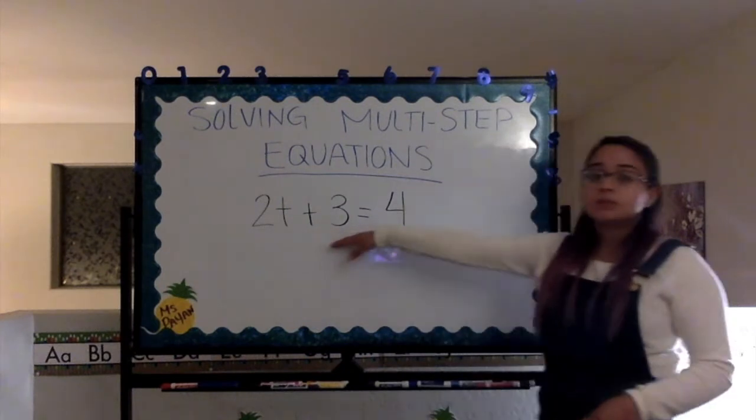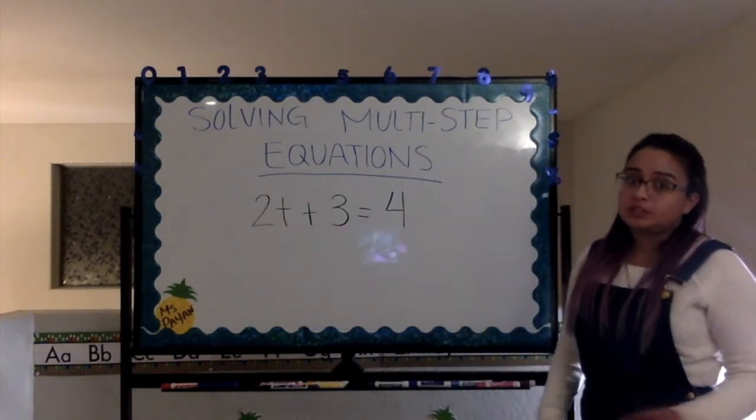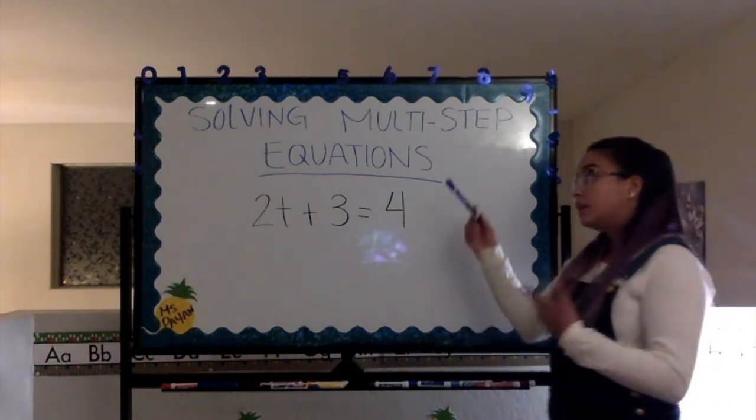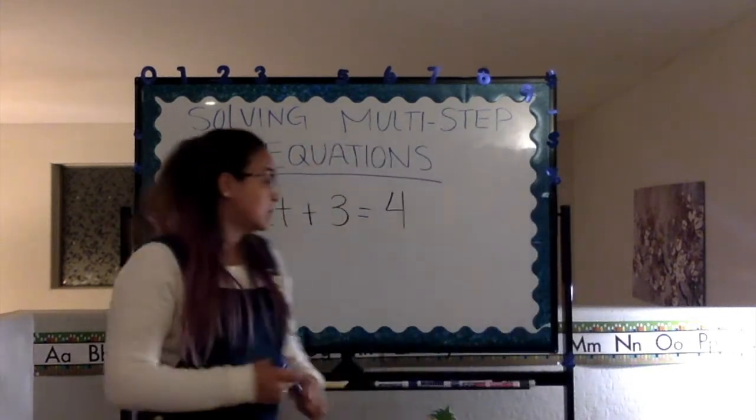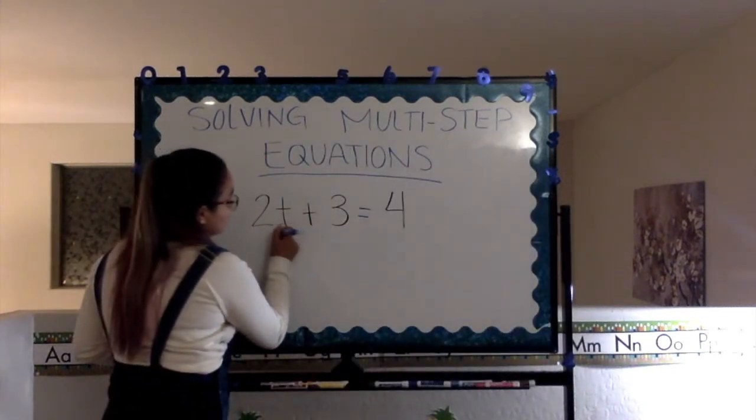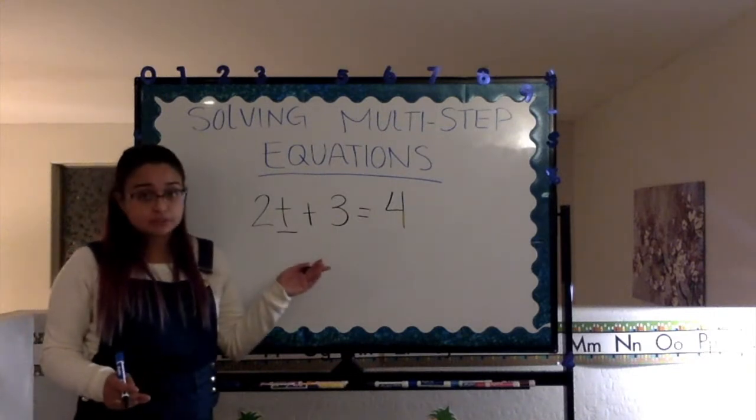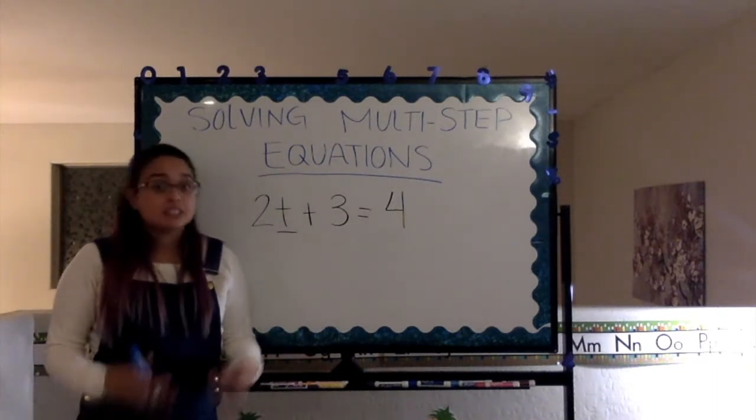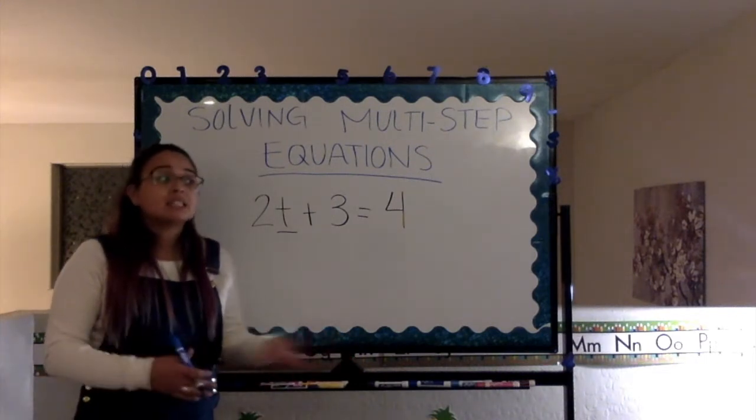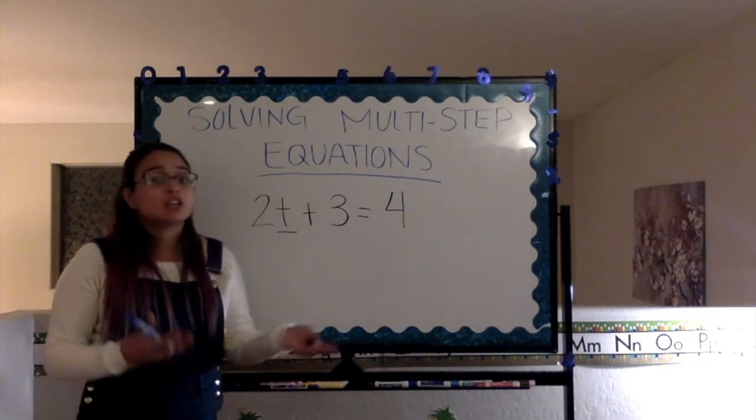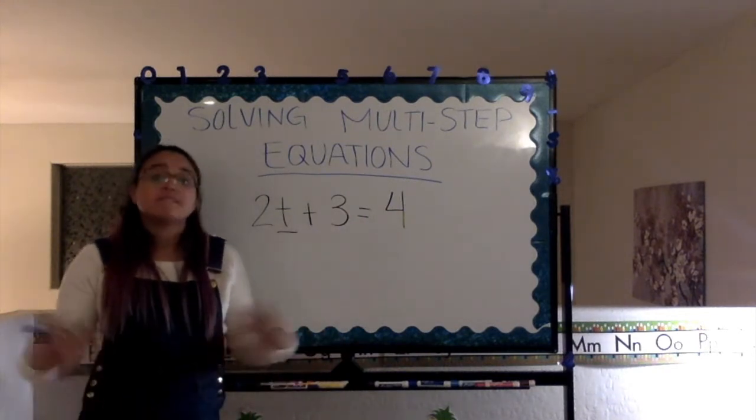Now, we have 2t plus 3 equals 4. Solving multi-step equations. We are solving an equation following multiple steps. Meaning, we're going to solve for t, which is our variable in this equation. Again, a variable is the letter in an equation. And it doesn't matter what letter it is. It's called a variable because we don't know the value of it. The value of it varies.